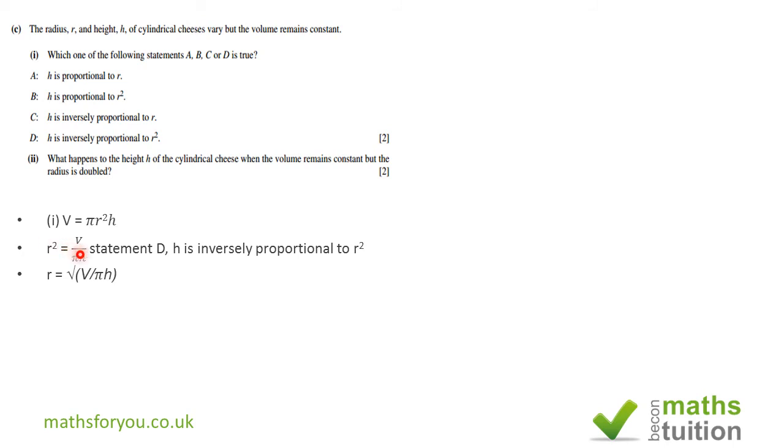Looking at the choices available to us, I think this is the right one because it says h is inversely proportional to r². So when r goes up, h comes down. It's inversely proportional where V/π is constant—that's the constant of proportionality.